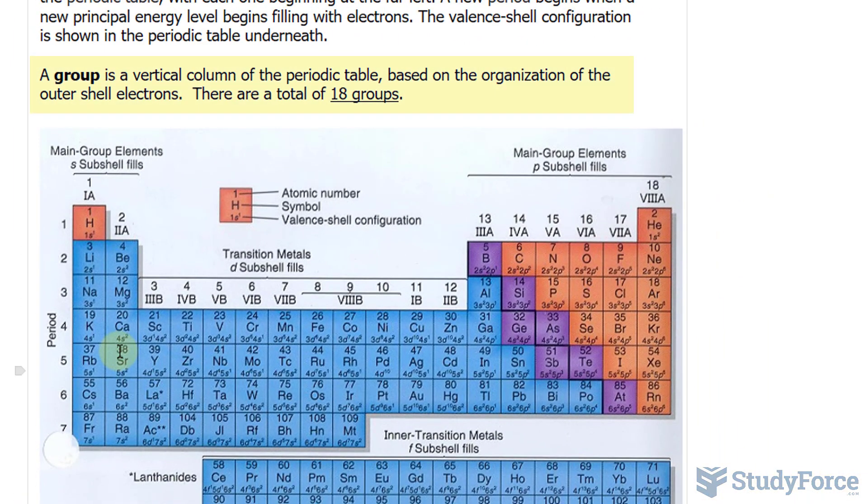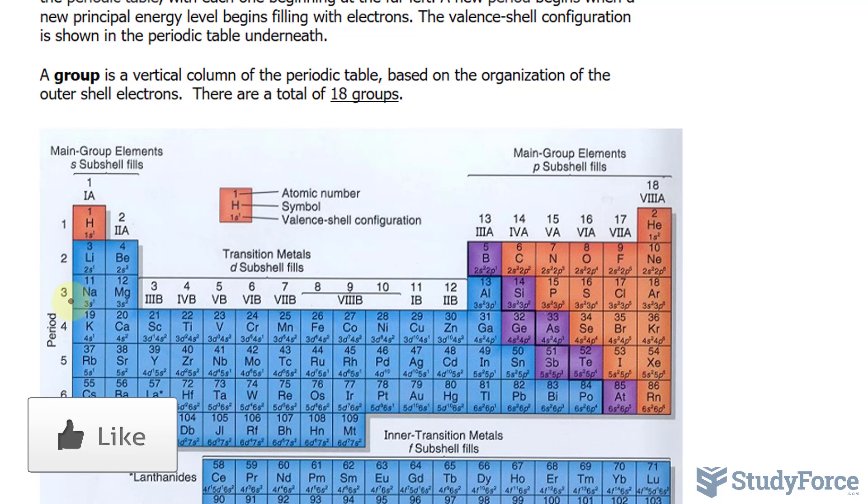A group is a vertical column of the periodic table, and it's based on the organization of the outer shell electrons. There are a total of 18, and as you can see, in this periodic table, they're labeled 1, 2, 3, all the way to 18.